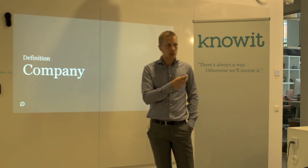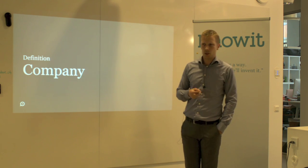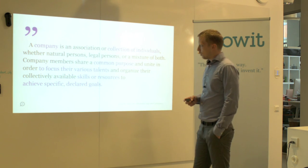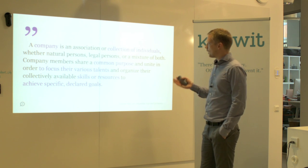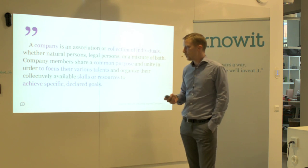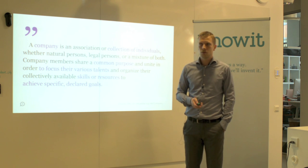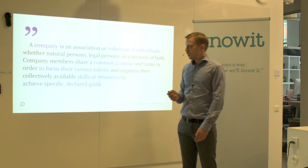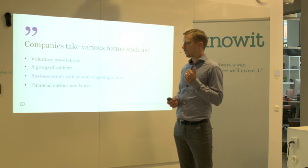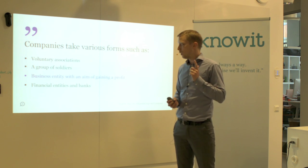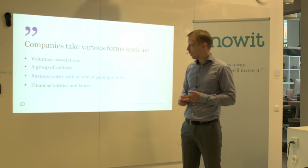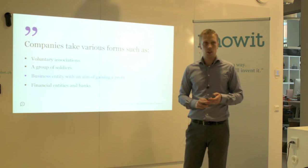Let's take a step back and look at what a company is really about. If we look at the definition of a company, we can see that a company is a collection of individuals with a common purpose to focus their various talents, skills, or resources to achieve specific declared goals. There are four categories of companies: a voluntary association, a group of soldiers, a business entity aiming to gain a profit, or a financial entity such as banks.